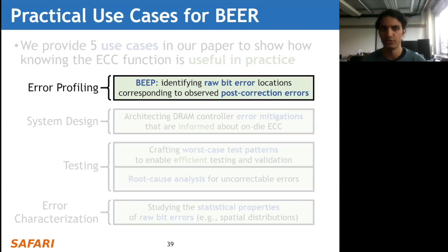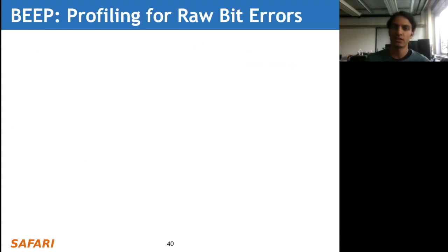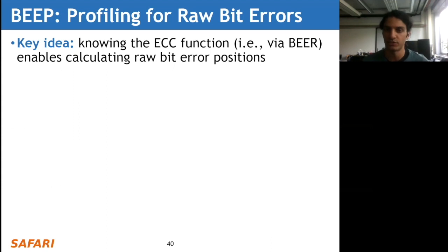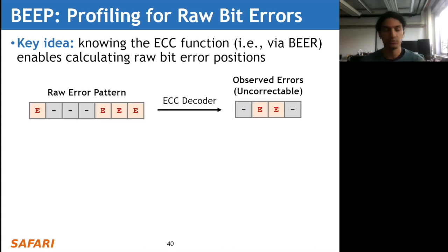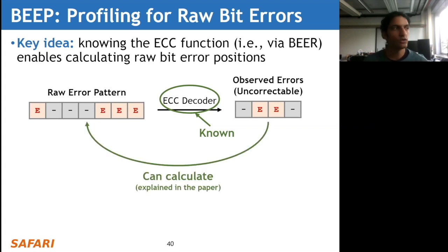The final use case deals with error characterization - knowing the ECC function enables better study of the statistical properties of raw bit errors, such as their spatial distributions within the DRAM chip. Let's talk about BEEP in detail. BEEP deals with profiling for raw bit errors. The key idea is that knowing the ECC function via BEER enables us to calculate the raw bit error positions. For example, suppose we have a raw error pattern - before ECC correction - of four errors within the code word. The ECC decoder represents the transformation the parity check matrix defines, and we observe some two-bit errors in the post-correction data word.